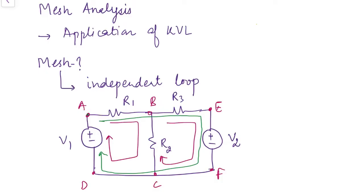The third loop, a-b-e-f-c-d-a, contains two loops inside it, so it is not an independent loop and therefore not a mesh. So what we can say is that all meshes are loops, but all loops are not meshes.